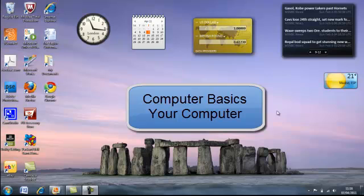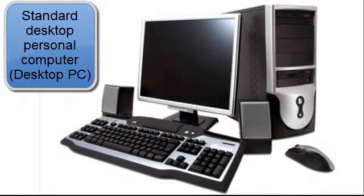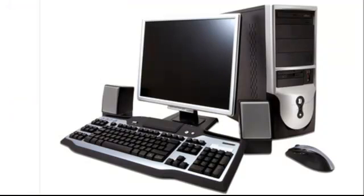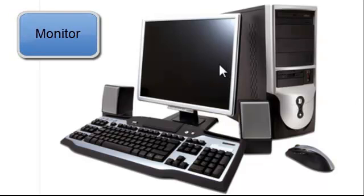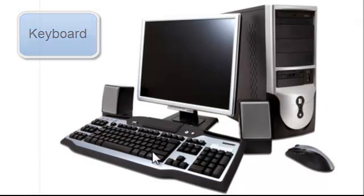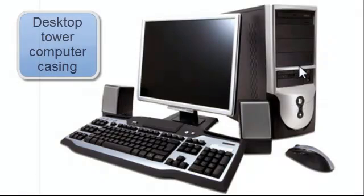The lesson is about your computer. We're going to talk about your computer and the various components that make up your computer and the layout of your PC or personal computer. We have here a picture of a standard desktop personal computer or PC, with the main parts being the monitor, the keyboard, the mouse, speakers, and a desktop tower computer casing, which is probably the most common type of desktop computer casing.